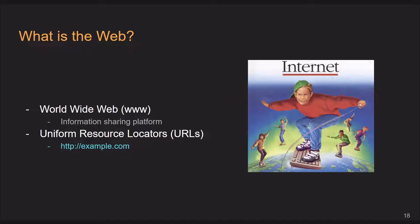When you went to that stream today, you entered what's called a uniform resource locator, or a URL — i.e., twitch.tv. This is basically an easy-to-remember address that flags a location on the web, such as this example.com right here.